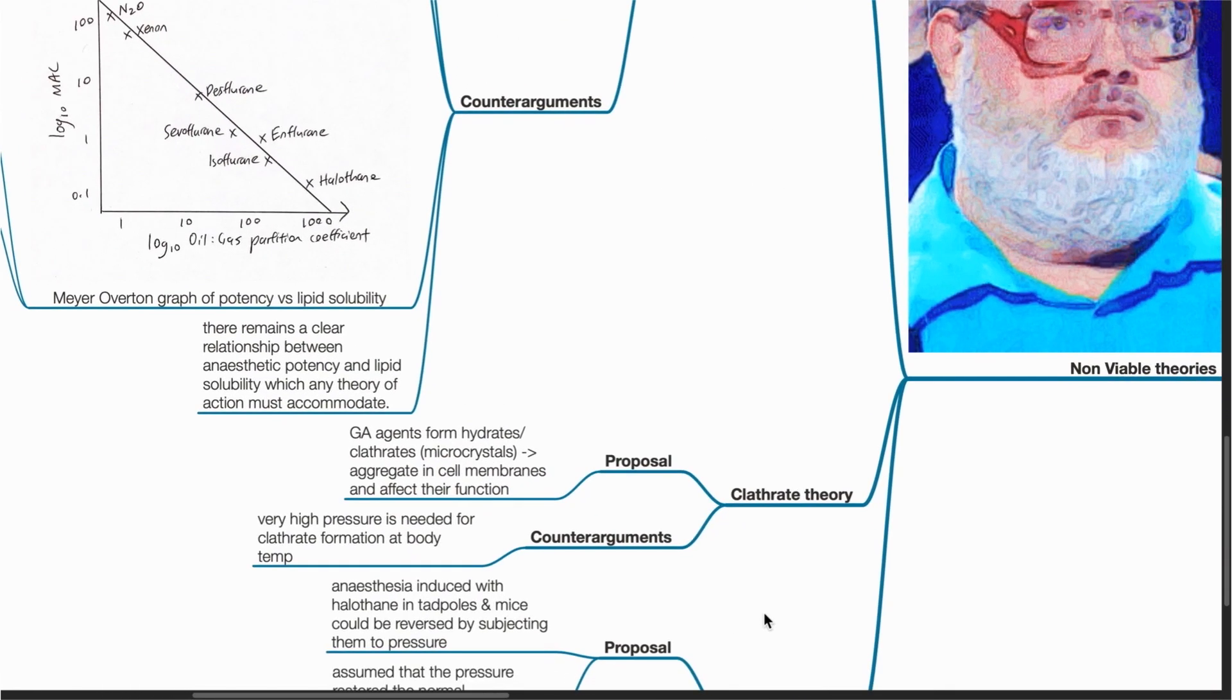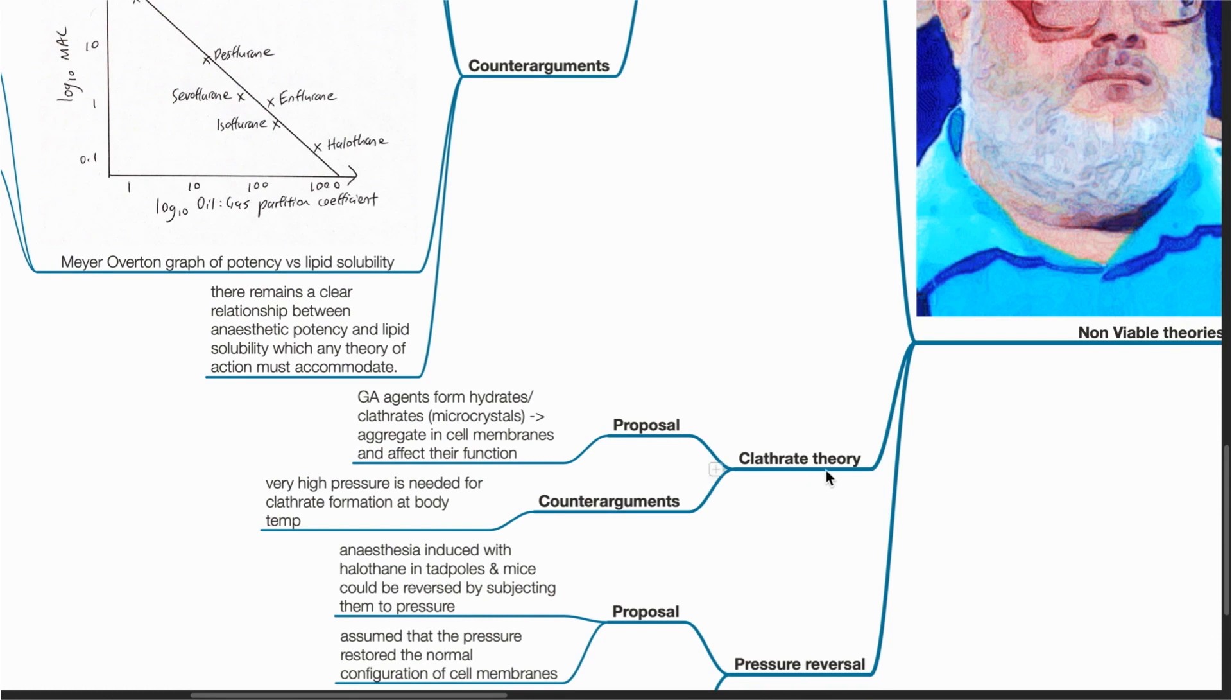We move on to the clathrate theory, which proposes that GA agents form clathrates, or microcrystals, which aggregate in cell membranes and affect their function. The counter-argument is that very high pressure is needed for clathrate formation at body temperature.